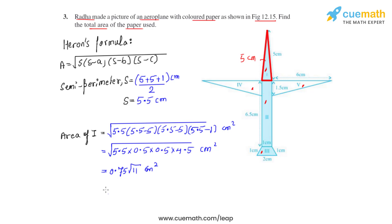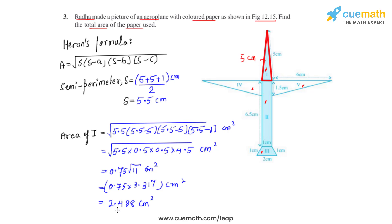Substituting the value of √11 as 3.317, we get 0.75 × 3.317 = 2.488 centimeter square, which is the area of region 1.